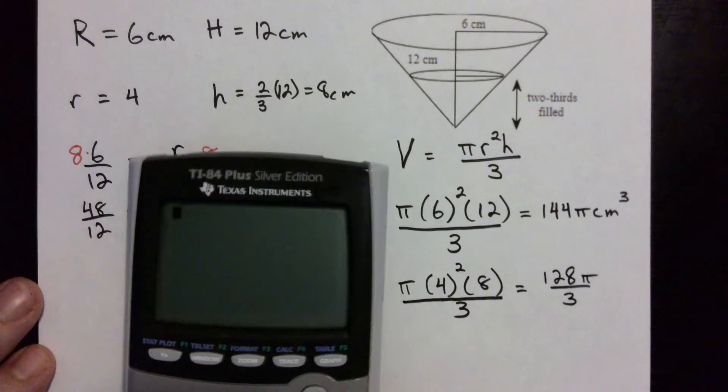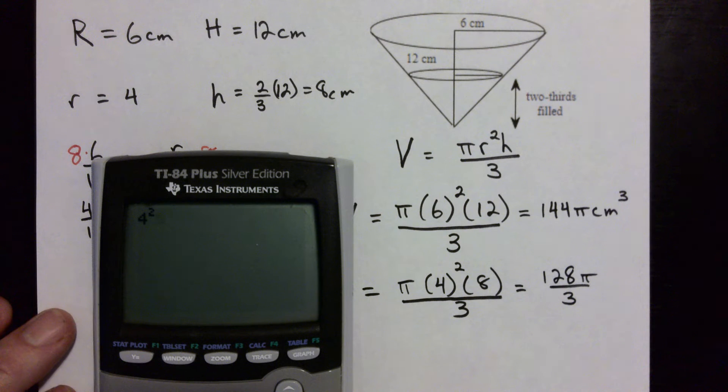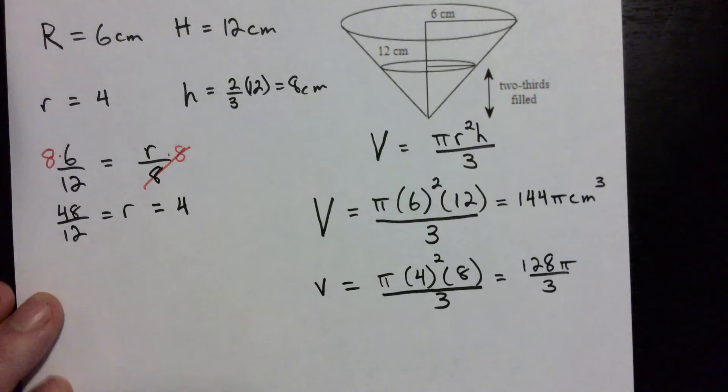Okay, let me show you that in the calculator as well. So 4 squared, I'm not going to put the π in there, 4 squared times 8 divided by 3, math enter enter, and we get 128 over 3 and then put the π on the end.